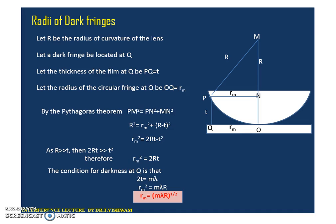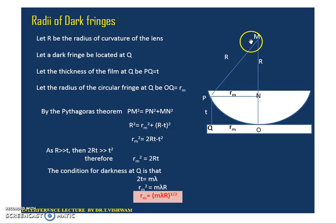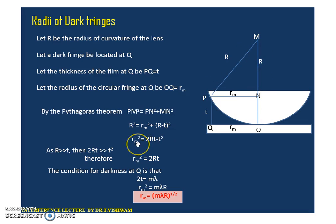Let us calculate the radius of the dark fringe. Here, MO is the total distance R, the radius of curvature. Considering a particular thickness of the circular air film where we get the dark fringe, the corresponding radius is rm. Using the figure and Pythagoras theorem: R² = rm² + (R − t)², which gives rm² = 2Rt − t². Since t is very small, t² is negligible compared to 2Rt, so rm² = 2Rt.